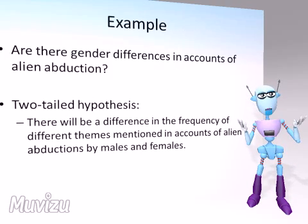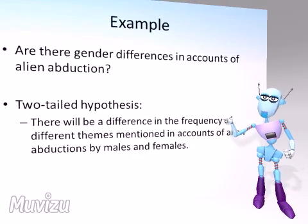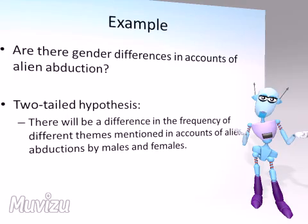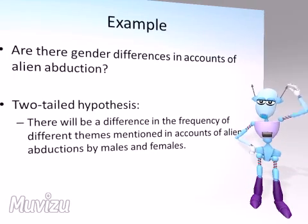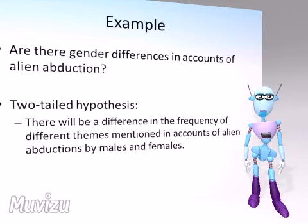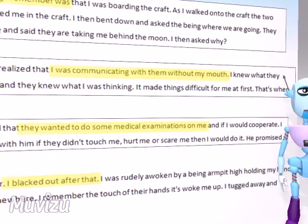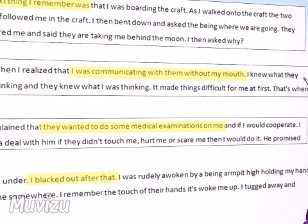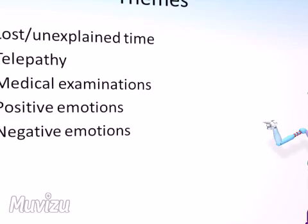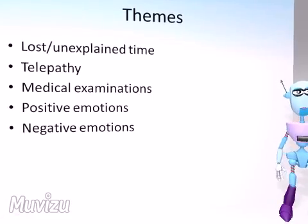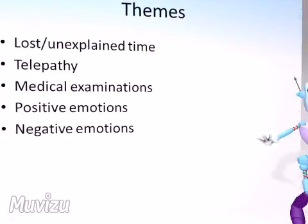So to show you an example, I might be interested in whether there are gender differences in accounts of alien abductions, as a random example. Because I'm not really sure what I might find, I can start with a two-tailed hypothesis along the lines of: there will be a difference in the frequency of different themes mentioned in accounts of alien abductions by males and females. Here are some extracts of some texts that I found looking online. So I can start to identify some themes from the highlighted text — things like lost or unexplained time, references to telepathy, talking about medical examinations, and positive and negative emotions reported by the speaker from interview.